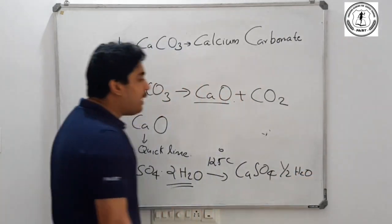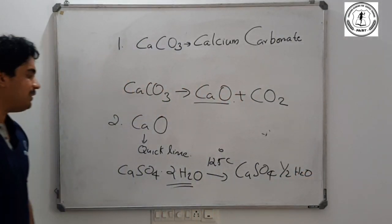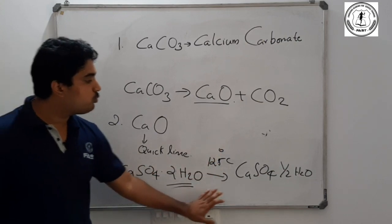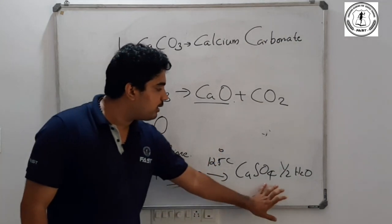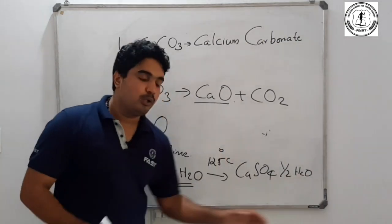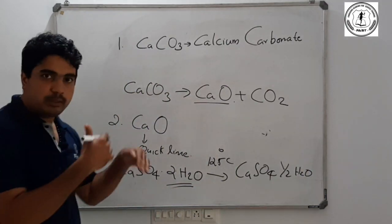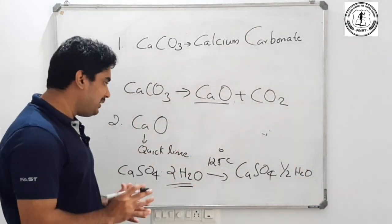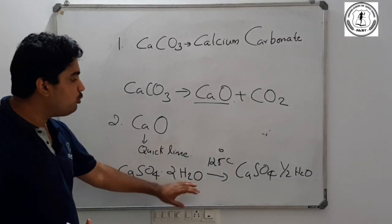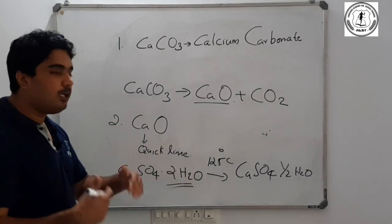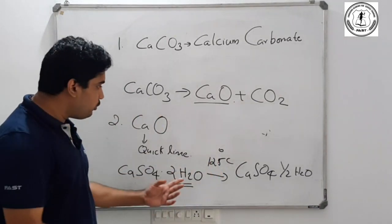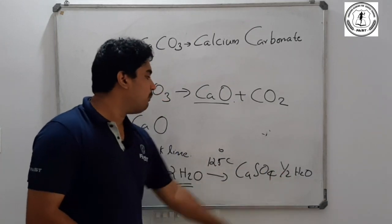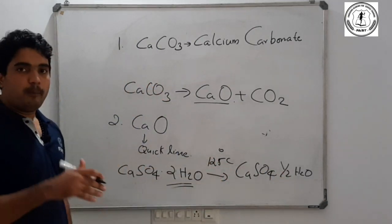We are going to make Plaster of Paris. Calcium sulfate 2H2O — with H2O, calcium sulfate is half H2O. When we heat gypsum to 120 degrees, we call it Plaster of Paris. So 2H2O becomes half H2O — that is called Plaster of Paris.